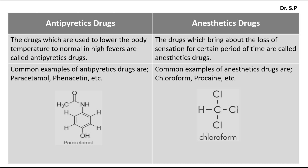The drugs which are used to lower the body temperature to normal in high fevers are called antipyretic drugs. Common examples of antipyretic drugs are paracetamol, phenacetin, etc. The drugs which bring about the loss of sensation for a certain period of time are called anesthetic drugs.